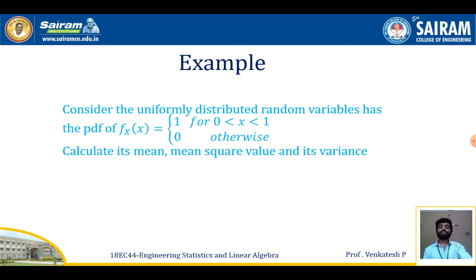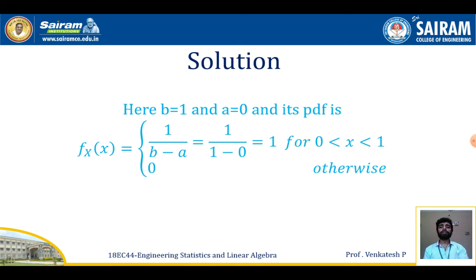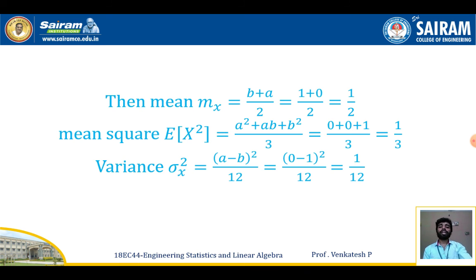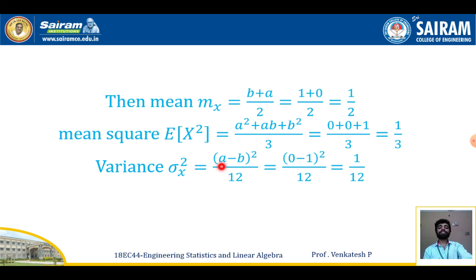Using a = 0 and b = 1: Mean = (a + b)/2 = (0 + 1)/2 = 1/2. Mean square E(x²) = (a² + ab + b²)/3 = (0 + 0 + 1)/3 = 1/3. Variance = (b - a)²/12 = (1 - 0)²/12 = 1/12.